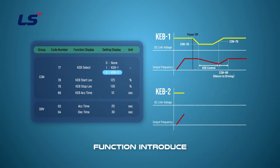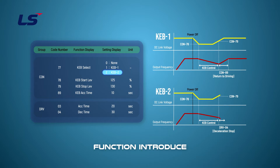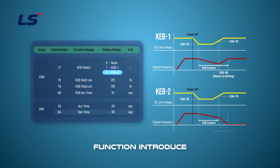When the input power is cut off, KEB2 mode controls the inverter output frequency as in KEB1 mode to supply the regenerative energy generated from the motor to the inverter. However, when the input power is restored and KEB control is stopped, the inverter operation stops by changing from energy buffering operation to deceleration stop operation. The deceleration time of DRV4 is applied to the operating frequency deceleration time during deceleration stop operation.